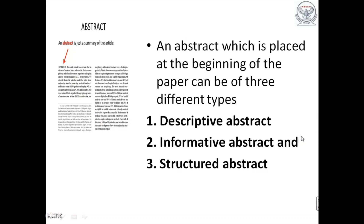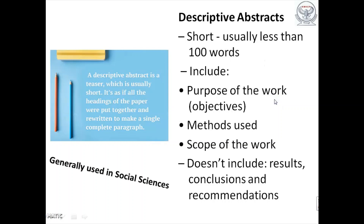Now an abstract can be of three different types: descriptive abstract, informative abstract, and structured abstract. A descriptive abstract is usually very short — less than 100 words — and it includes the purpose of the work, methodology, and scope of the work. What it does not include is results, conclusions, and recommendations. We do not encounter descriptive abstracts in sciences, especially in pharma sciences. You will see them in social sciences.